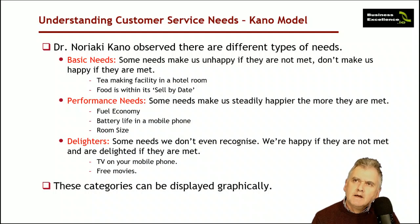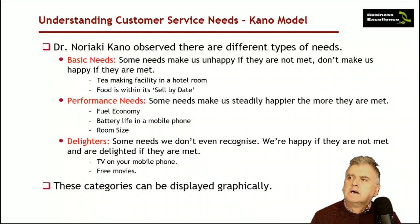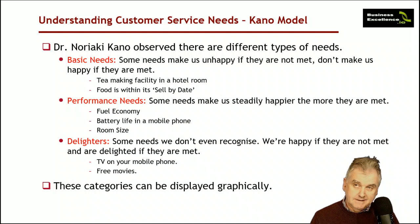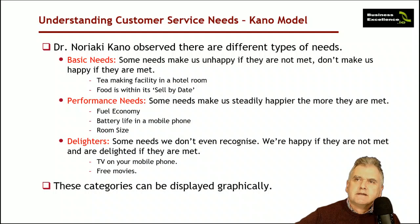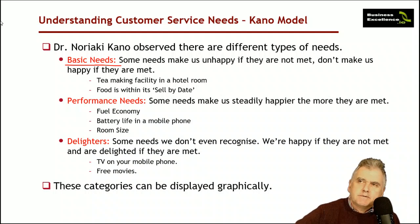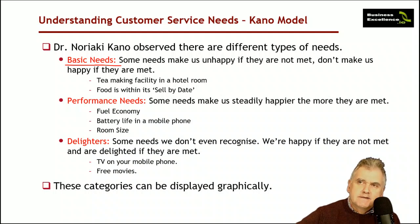What Kano was trying to figure out is that as customers we all have different expectations. Imagine if somebody buys food or buys a car — there are different expectations. He studied a lot of people and came to the conclusion that we have three different types of expectations. The first one he describes is basic expectations. For example, if you buy food in a supermarket you expect it to be within its sell-by date; if you rent a hotel room you'd expect internet, a television, an ensuite.